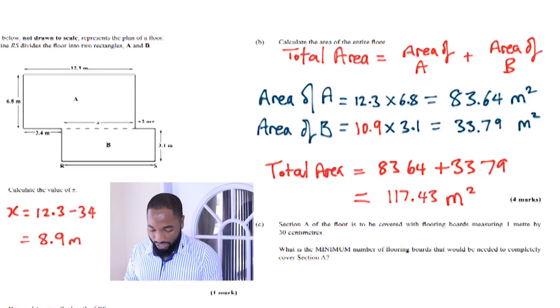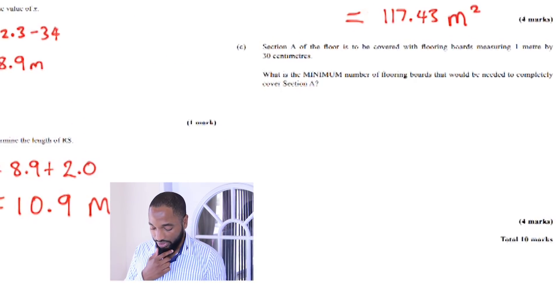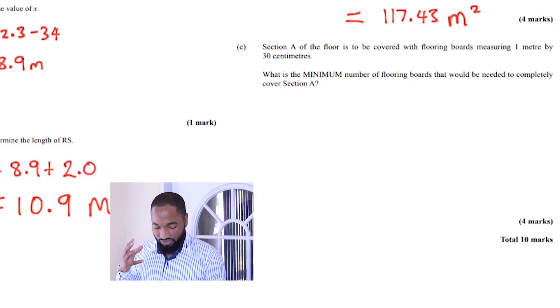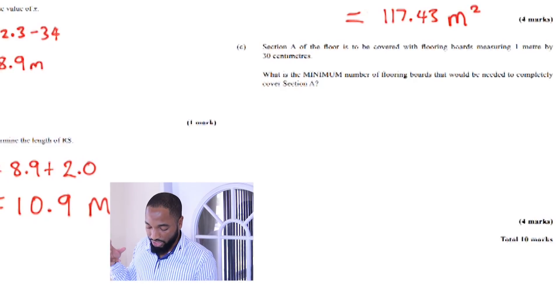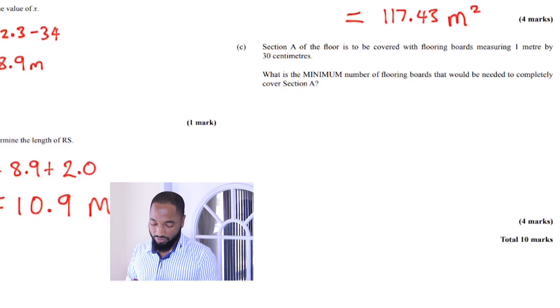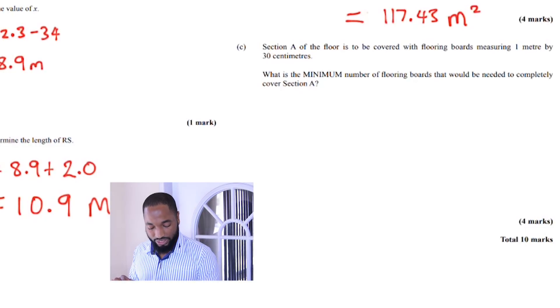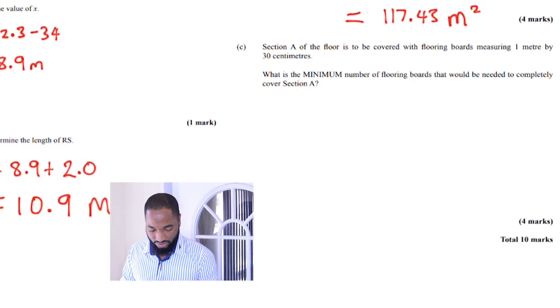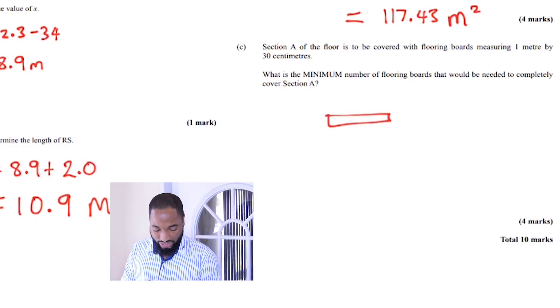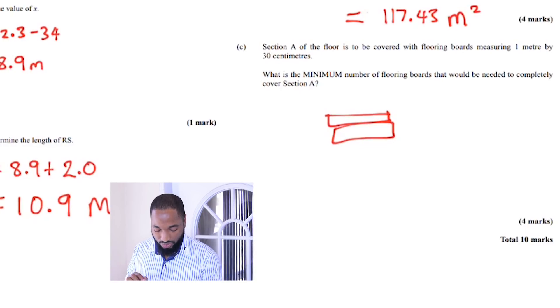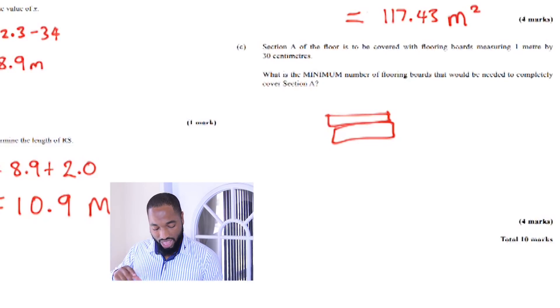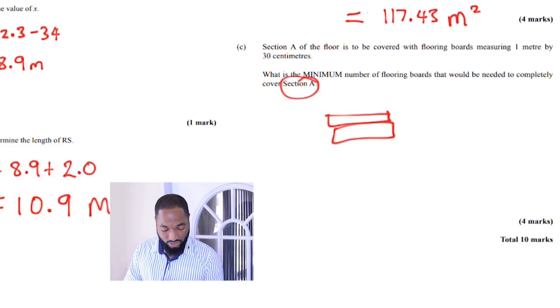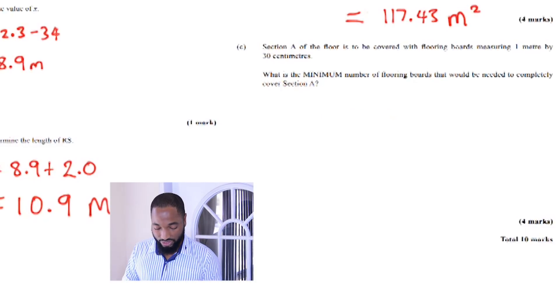Let's move on to the last part of the first question. Section A of the floor is to be covered with flooring boards measuring one meter by 30 centimeters. What is the minimum number of flooring boards that would be needed to completely cover section A? This is a simple one: small area. There's a small flooring board that needs to go in, so we just need to find the area of one small flooring board and divide by the area of the whole floor. Actually, it's not the whole floor, it's just section A of the floor. So pay attention, read your questions properly.